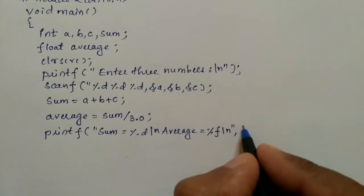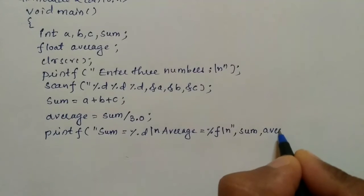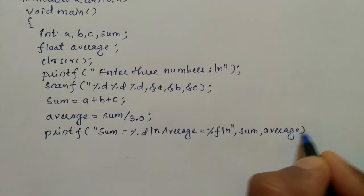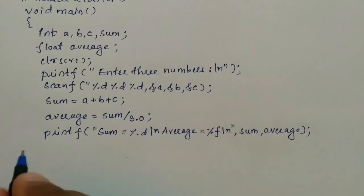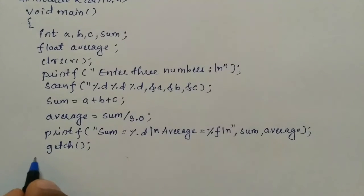Next I will put comma and here I am going to write the variable name sum and the next variable is average, and put semicolon. Next I am going to write getch(); curly closing brace.